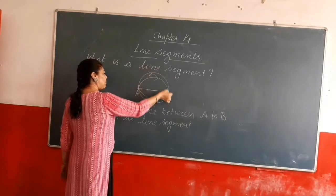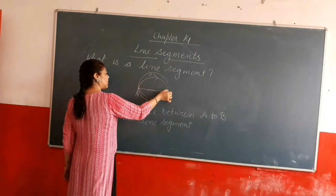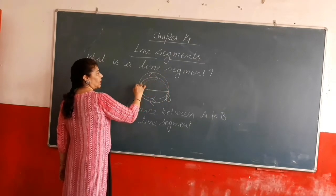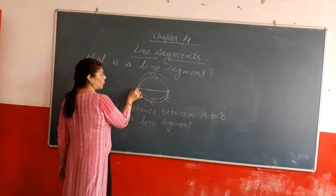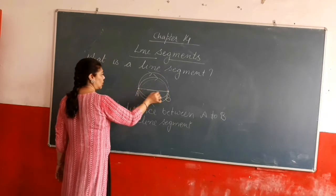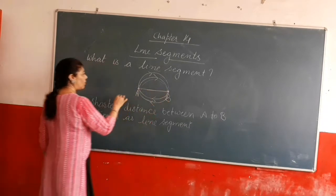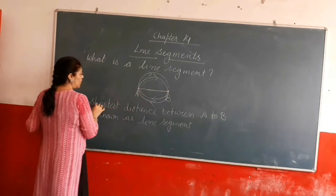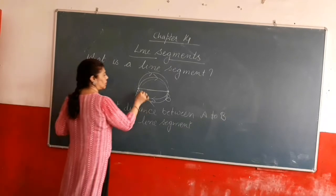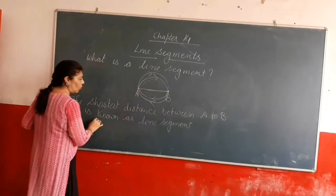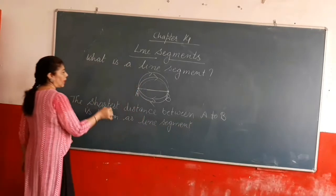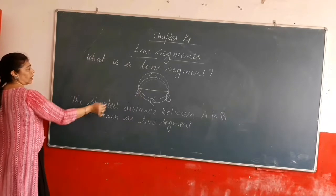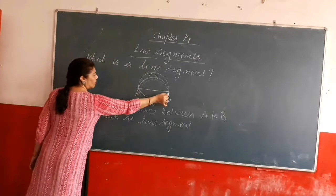If we go from A to B this way, that is a long distance and it is not straight. But the shortest distance and also straight — meaning the straight line and shortest distance between A and B — is known as a line segment. And it has two endpoints, that is A and B.